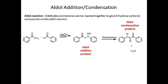Here's acetophenone, here's benzaldehyde. You react those two together and your initial product is the aldol addition product, also called a beta-hydroxyketone, because the hydroxyl group is beta to the carbonyl. The carbonyl is here, this is the alpha position, and this is the beta position.